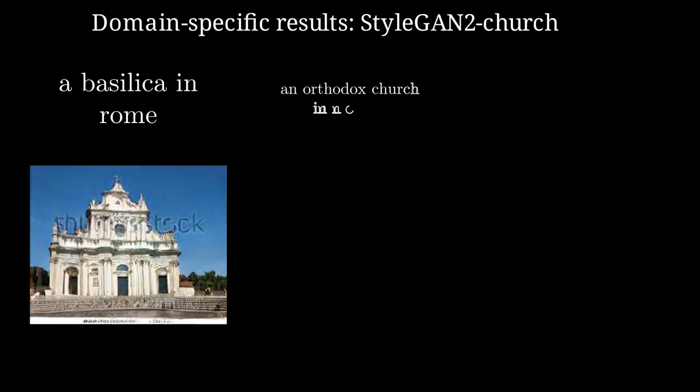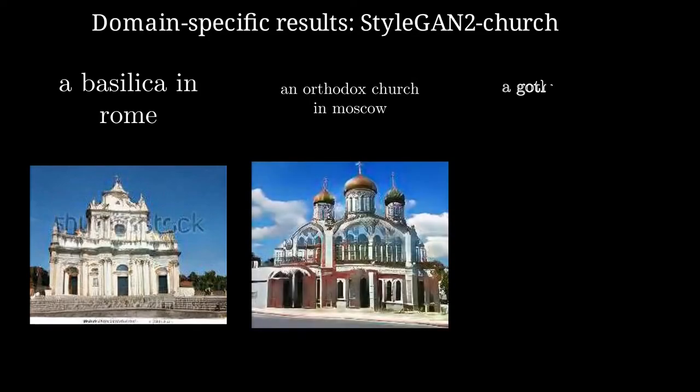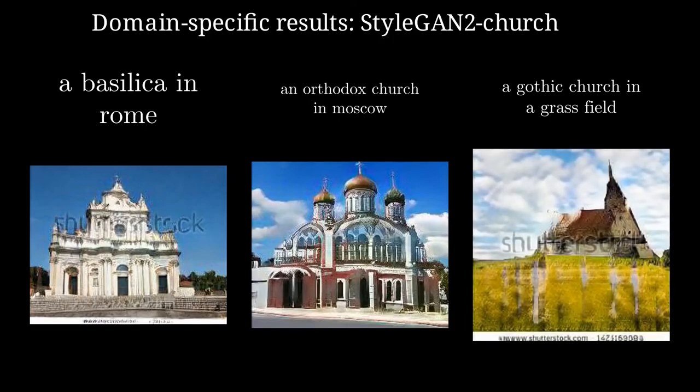These are the results for the domain-specific target text using StyleGAN2 Church. Here you can see some watermark artifacts caused by the dataset used to train the generative network.